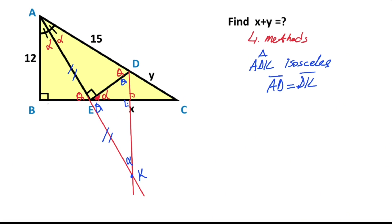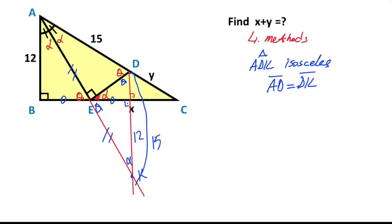Therefore the sides opposite alpha are also equal. If here is 12 units, that means this length must also equal 12 units. You know that this length is 15, that means three units are left here. Then this triangle and this triangle are similar.